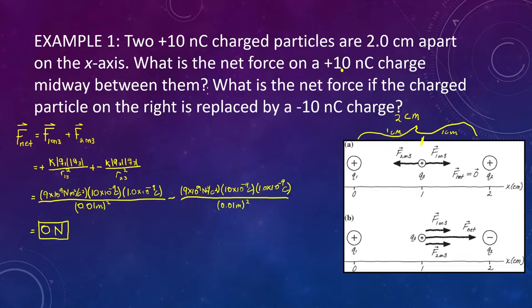Now let's do part B. It says: what is the net force if the charged particle on the right is now negative? So we now have a negative charge on the right. We have a slight adjustment, but the values are all still the same. However, there's going to be one key difference — that is the difference in our signs.